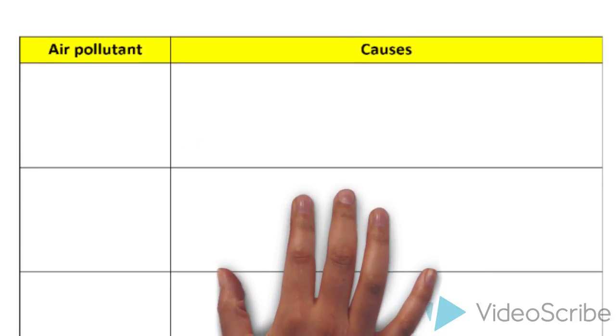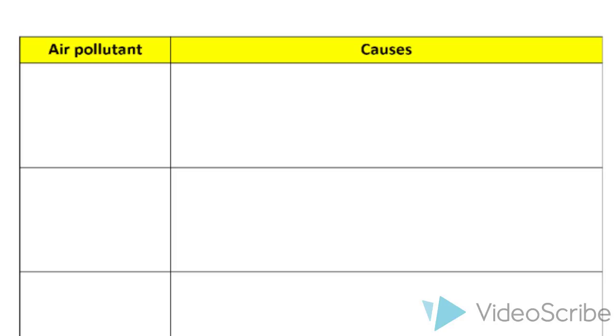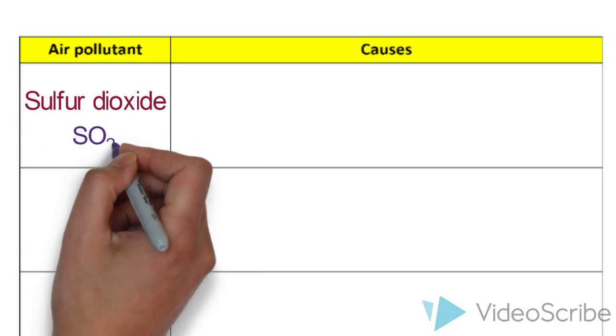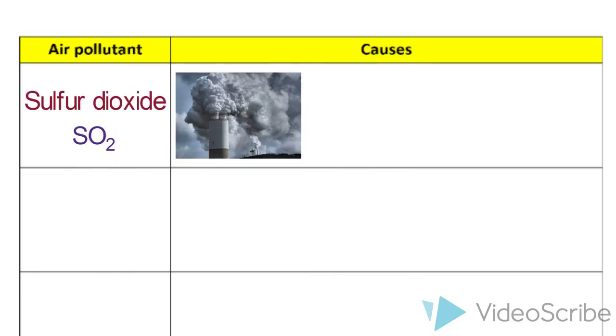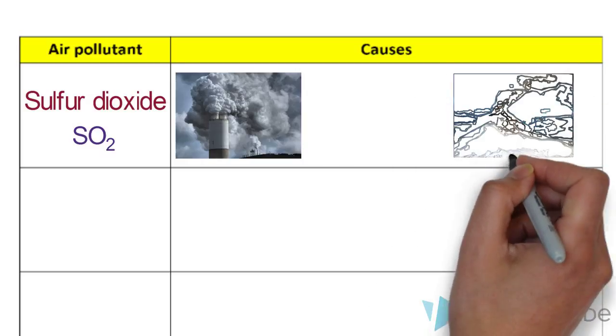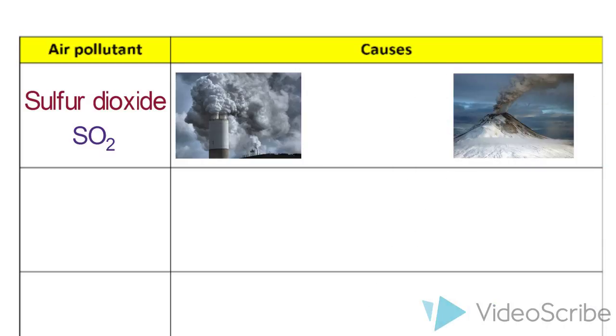In your syllabus, there is a total of six key air pollutants that you must know. Firstly, there is sulfur dioxide. Sulfur dioxide is produced when coal and petroleum are burnt to generate electricity. This is because these fuels often contain sulfur as an impurity. Besides that, sulfur dioxide can also be produced naturally during volcanic eruptions.